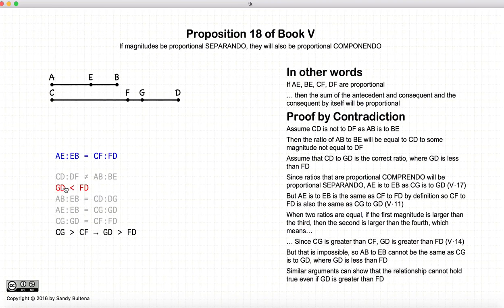But we started assuming that GD was less than FD. So now we have GD is less than FD, GD is greater than FD. And there is our logical inconsistency. These two things cannot both be true. And if they cannot both be true, then our original assumption must be false.